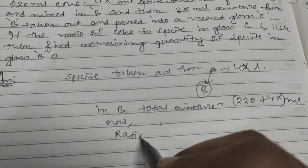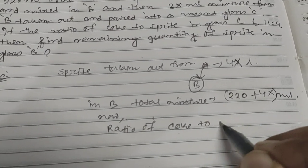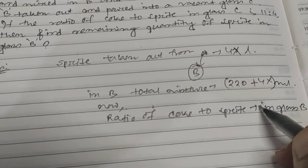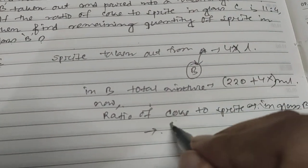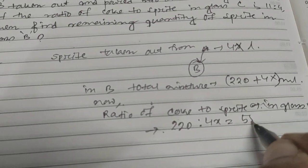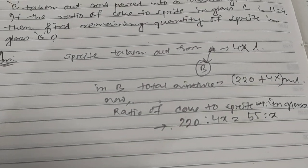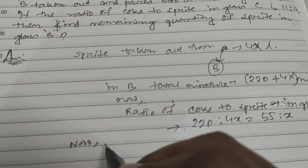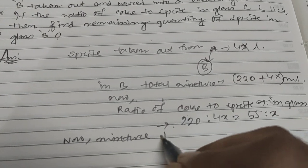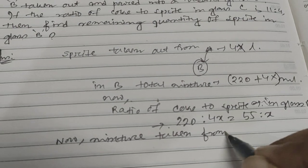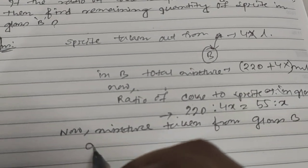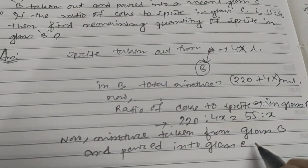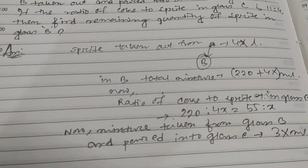Now the ratio of coke to sprite in glass B is 220:4x, which means 55:x. Now mixture taken from glass B and poured into glass C is 3x milliliter.